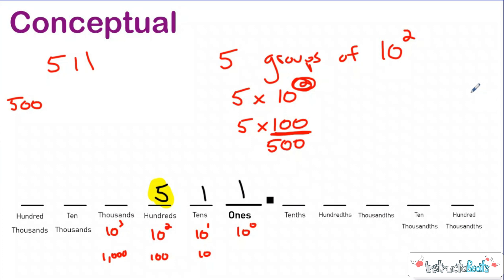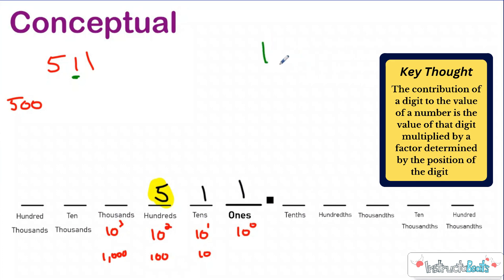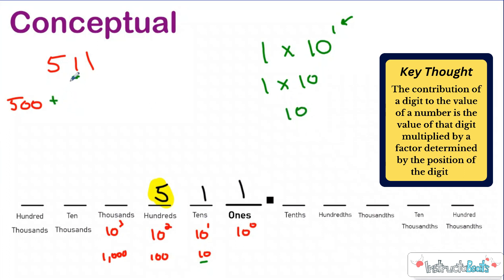We've overcomplicated the whole process, but I really want you to understand why it's worth 500 — not just because it's a 5 in the hundreds place. Let's take a look now at the one in the tens place. We obviously know that is going to be 10. But let's really break it down. The digit is a one, and what is it contributing to 511 — in other words, what's the value of just this one in the tens place? We're going to multiply it by a factor determined by the position of the digit. The 1 is in the first position to the left of the ones place, otherwise known as the tens place, so we're multiplying it by a factor of 10. 10 to the first power is just 10. So this one is contributing a value of 10 to the overall value of this number.